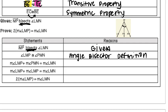In the next line, the measure of angle LMP plus the measure of angle PMN equals the measure of angle LMN. What I can see here is that I'm adding two angles that are next to each other, so that's just the angle addition postulate — stating that if you add those two measures together, you get the outer angle.